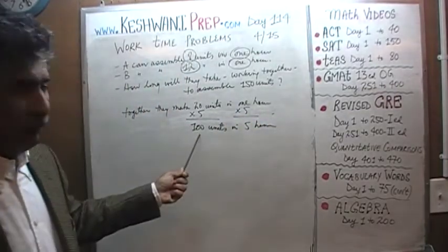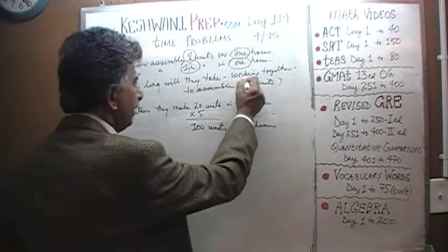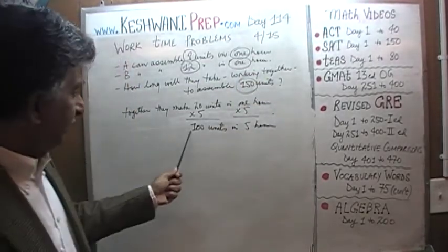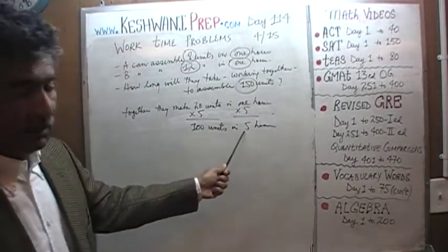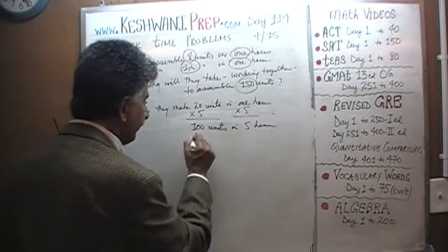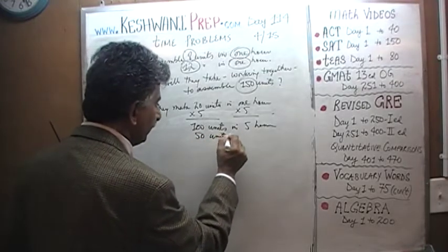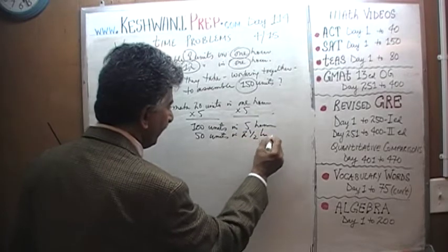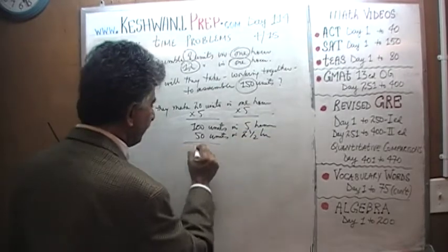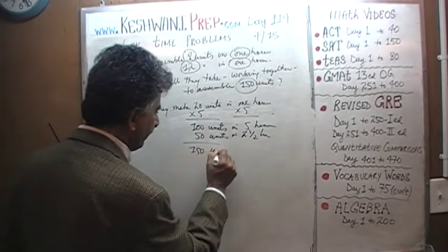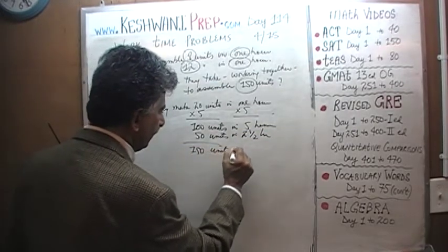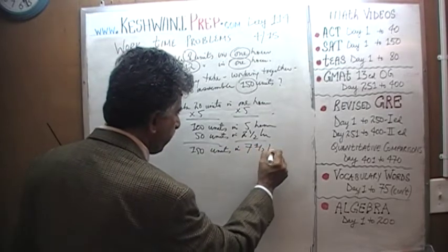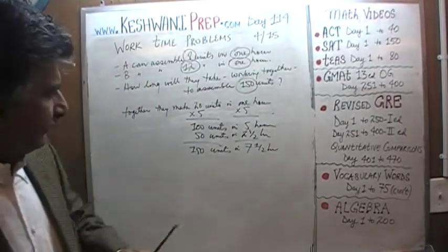But we're not interested in 100 units. The question is how long will it take them to make 150 units. If 100 units takes five hours, then another 50 units should take half as much — two and a half hours. Therefore, they will make 150 units in seven and a half hours.